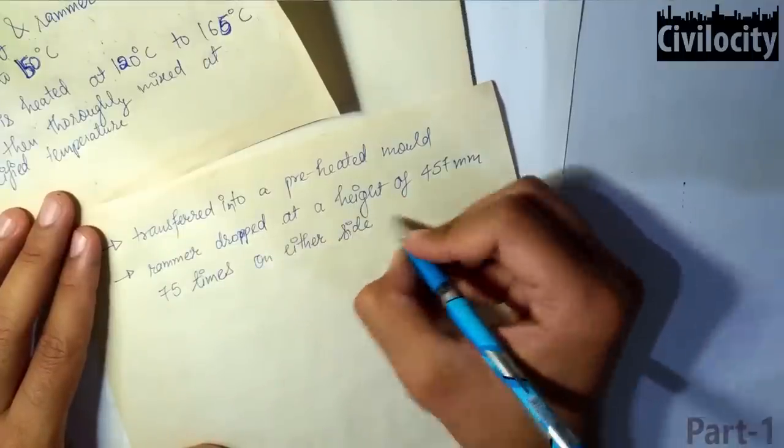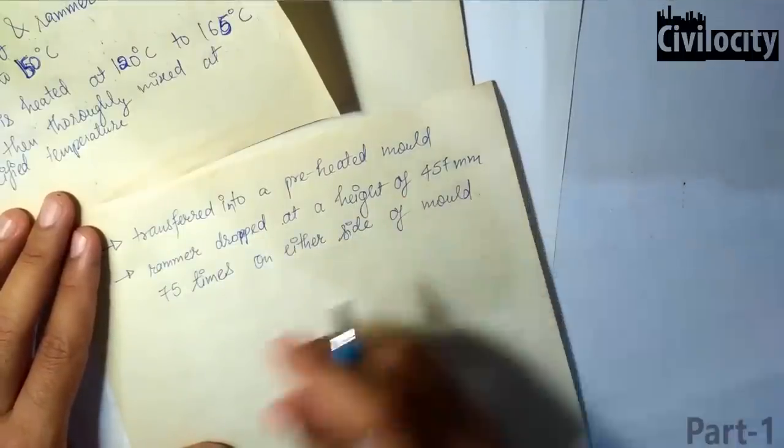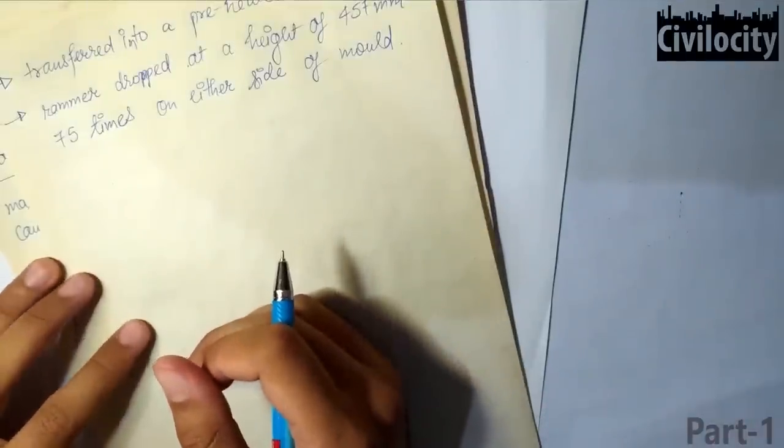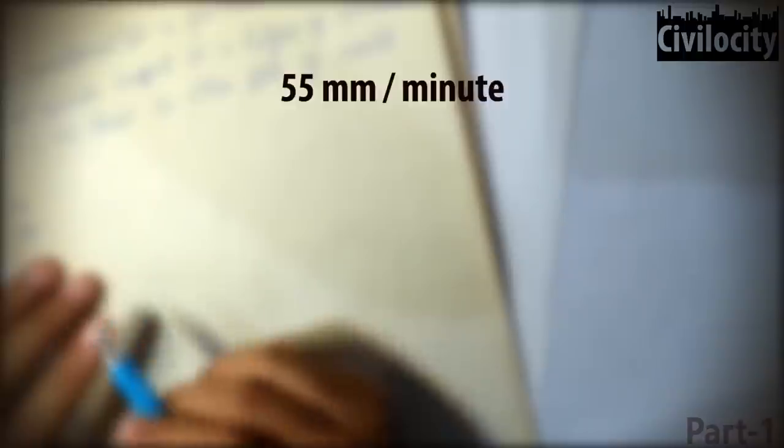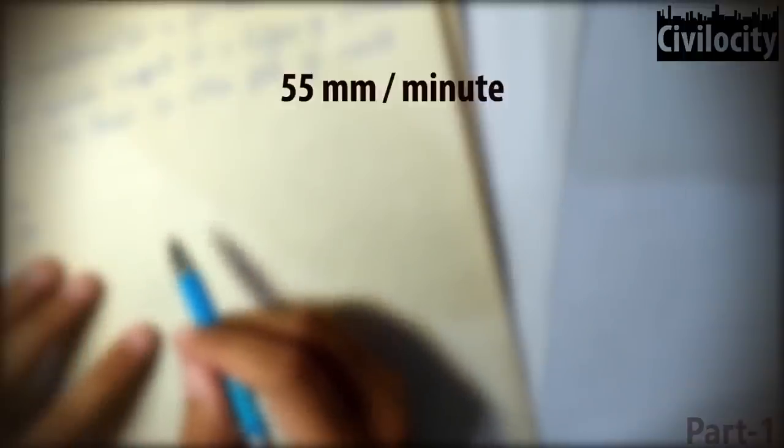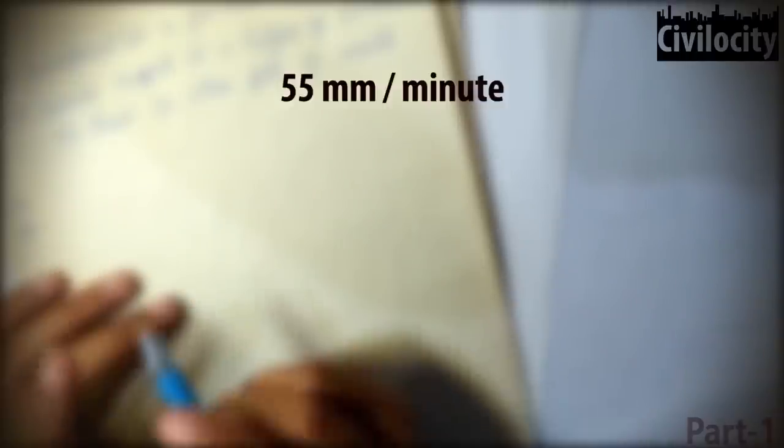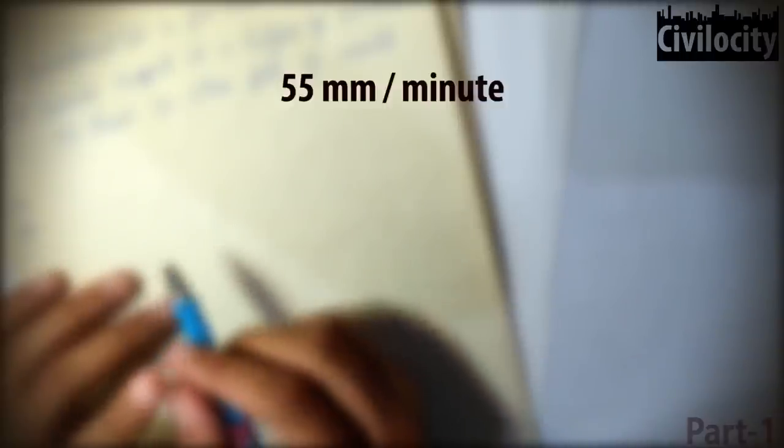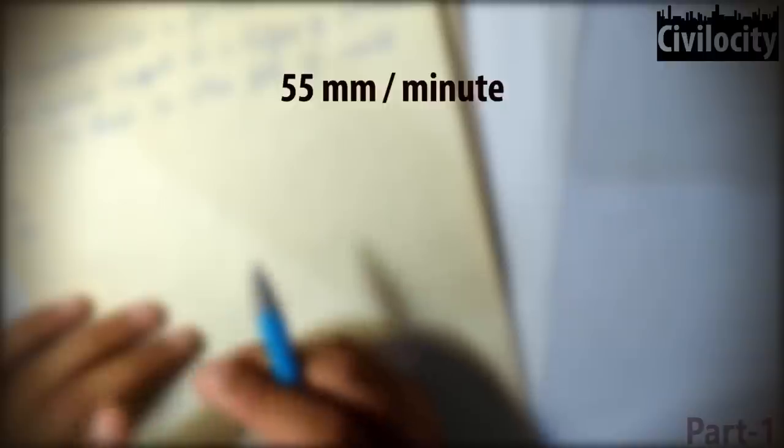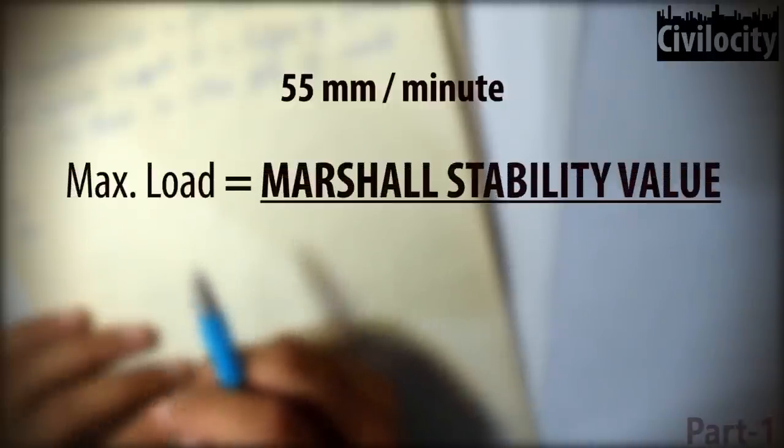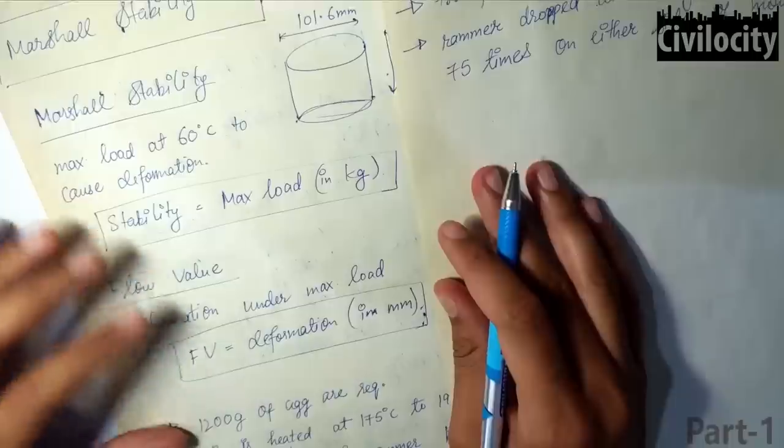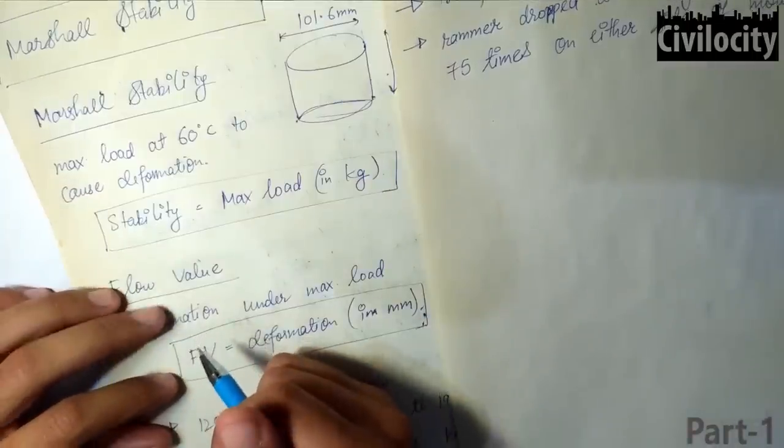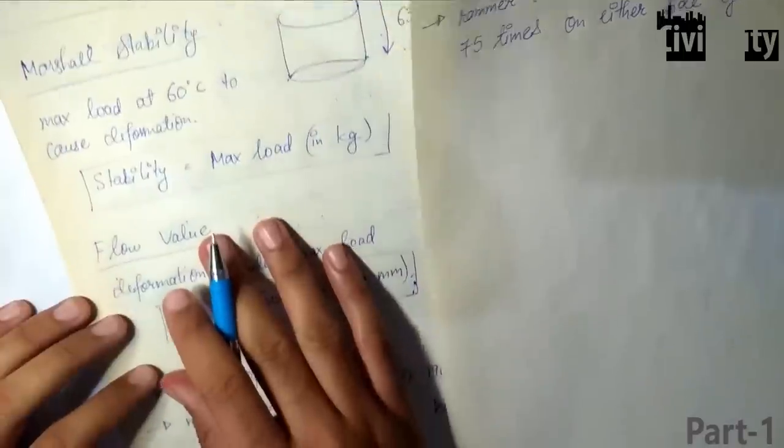After the compaction, the specimen is sent to Marshall Stability Testing Machine and a constant deformation load at a rate of 55 mm per minute is applied and the deformation readings are closely observed. The maximum load reading and the corresponding deformation of the specimen at failure load are noted. And after that, these values are expressed in terms of Marshall Stability and Marshall Flow values. Once again, I want to tell you that Marshall Stability is the maximum load at 60 degree Celsius to cause the deformation and the flow value is the deformation caused at the maximum load.